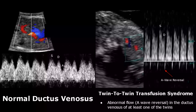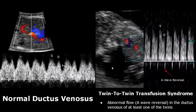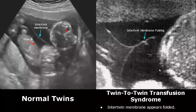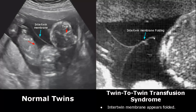Pulsed wave Doppler is very helpful in diagnosing twin-to-twin transfusion syndrome. Regarding ductus venosus, we may find A wave reversal in at least one of the twins — the A wave will be seen below the baseline, whereas the normal A wave is above the baseline. Twin-to-twin membrane folding may also occur and may be a signal of twin-to-twin transfusion syndrome.